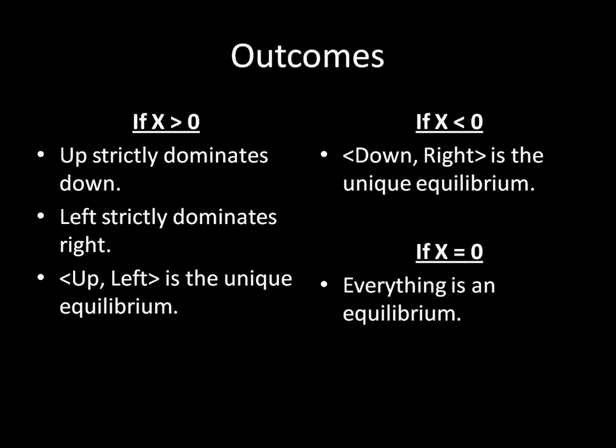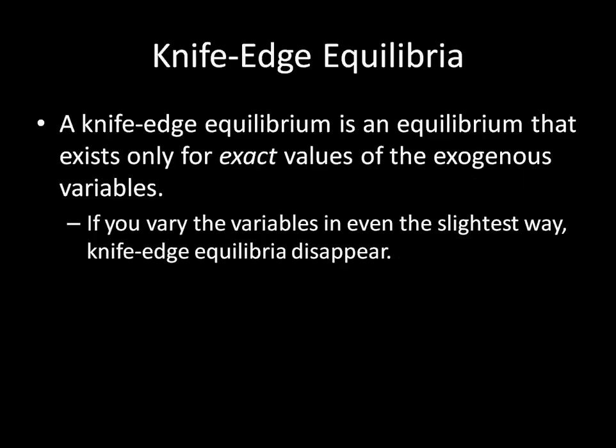Now, we call some of these equilibria knife-edge equilibria. So a knife-edge equilibrium is an equilibrium that exists only for exact values of the exogenous variables. In this case, x is our exogenous variable. If you vary the variables in even the slightest way, just a tiny, tiny, tiny amount, then a knife-edge equilibrium disappears.